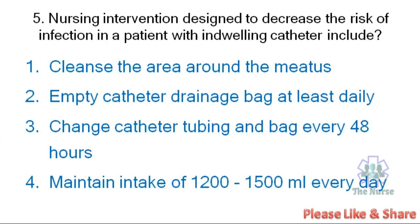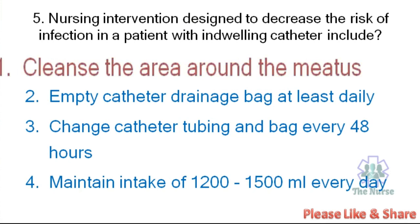Next question. Nursing interventions designed to decrease the risk of infection in a patient with an indwelling catheter include: Cleanse the area around the meatus, Empty catheter drainage bag at least daily, Change catheter tubing and bag every 48 hours, or Maintain intake of 1200 to 1500 ml each day. The correct answer is cleanse the area around the meatus — that is the correct measure to reduce infection in a patient with an indwelling catheter.